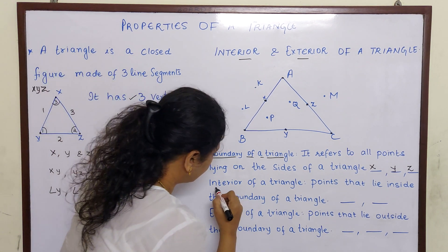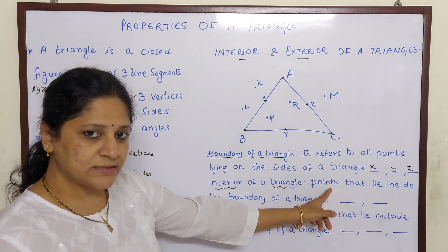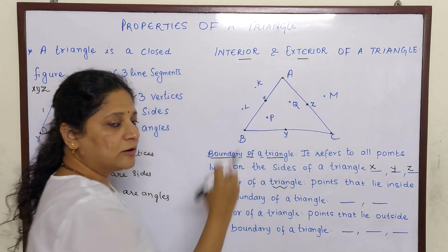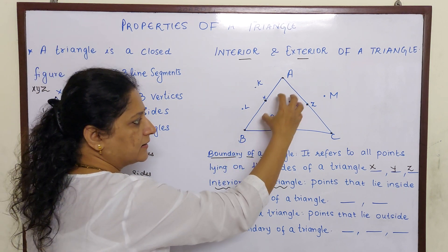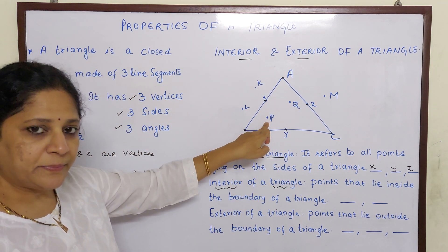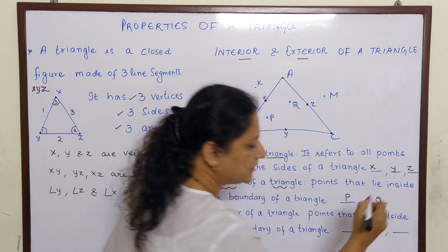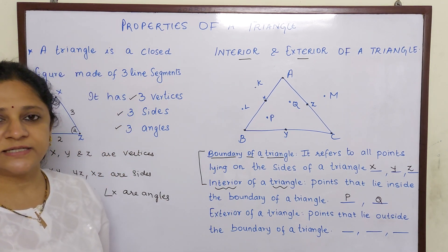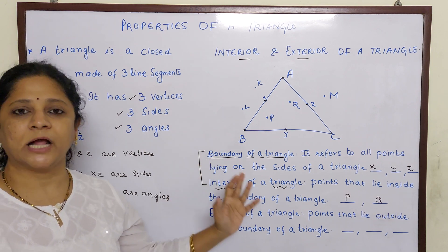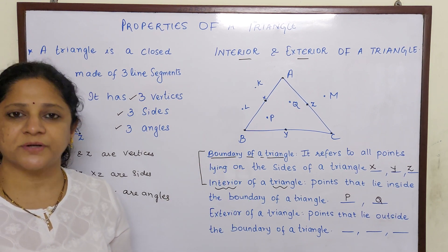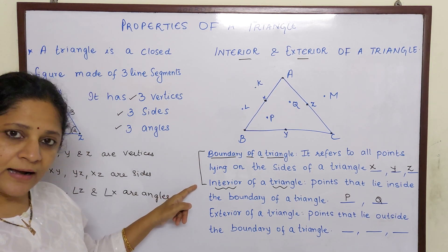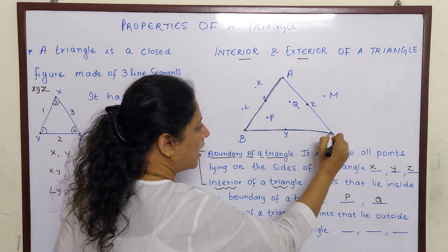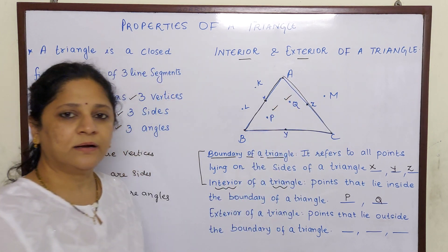So what is the interior of a triangle? Points that lie inside the boundary of a triangle are interior points. Now whatever points are inside the triangle — point P and point Q — so they are interior points of a triangle. This boundary and this interior together make the triangular region. So the boundary of a triangle and the interior of a triangle together make a triangular region.